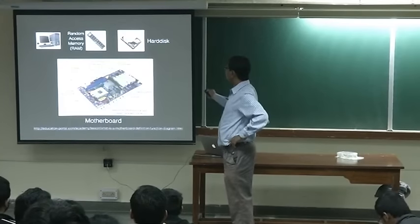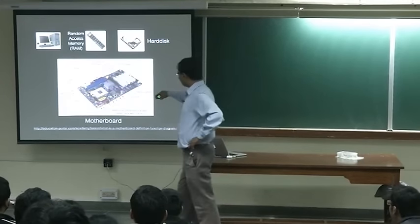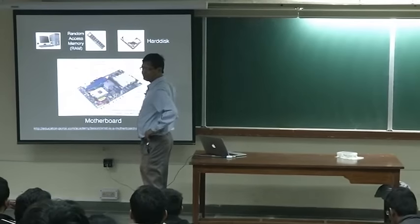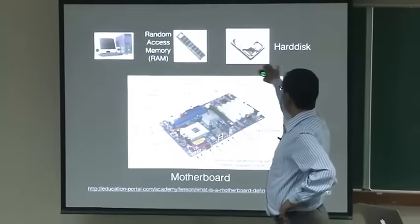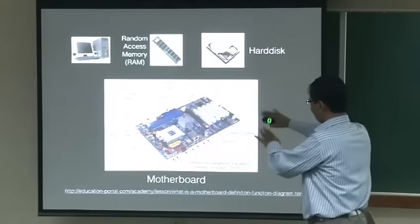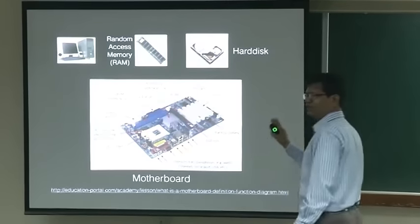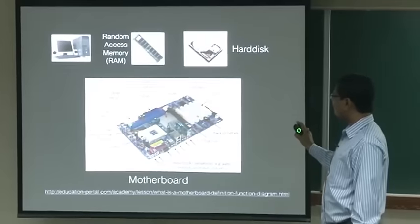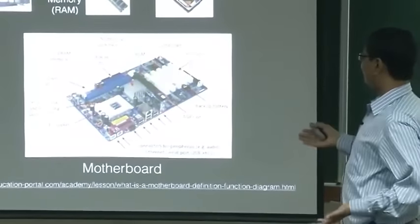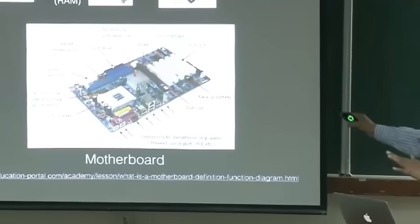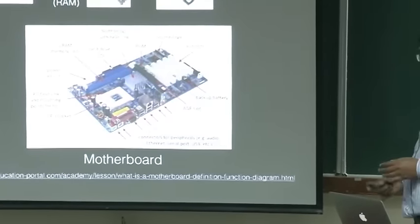There is something called a hard disk — that is also memory. The hard disk is connected from the CPU via the motherboard. So these two — RAM and hard disk — are both memory. The CPU is here, memory is here, and the interface has lots of connectors which connect to input/output, graphics cards, and so on. You do not need to know all of it for this course, but it is interesting how it is evolving.